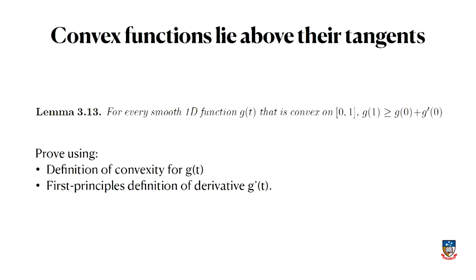Before we prove that, we need a little lemma, a tiny little result, which I won't prove, which is that for any smooth 1D function that's convex on 0 to 1, g of 1 is greater than or equal to g of 0 plus g prime of 0. That's not a very interesting result, but it's useful, so I'll leave you to prove it.